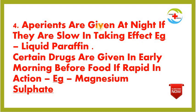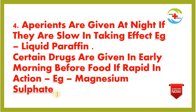Point 4: Aperients are given at night if they are slow in taking effect — for example, liquid paraffin or Dulcolax tablet. Certain drugs are given in the early morning before food if they are rapid in action — for example, magnesium sulfate. Magnesium sulfate acts rapidly; if given in the morning, it will produce a bowel motion within 20 to 30 minutes.